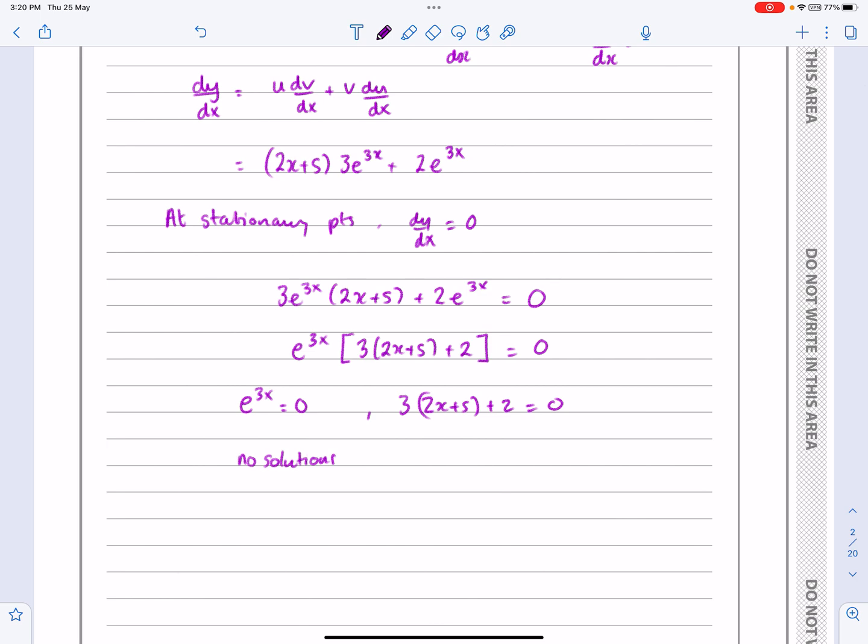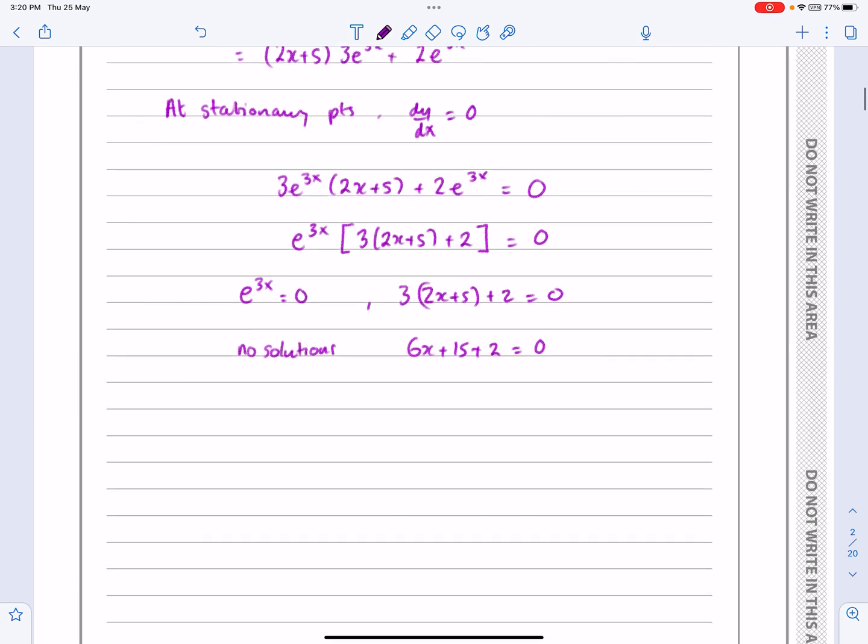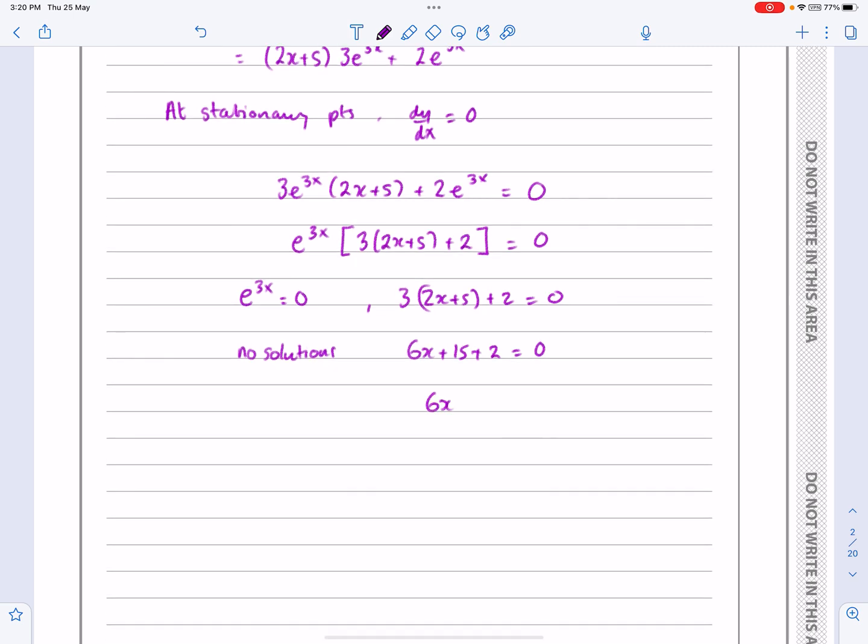So that means we've got the other bit, let's just tidy that up: 6x + 15 + 2 equals 0, which gives me 6x equals minus 17, and gives me x equals minus 17 over 6.